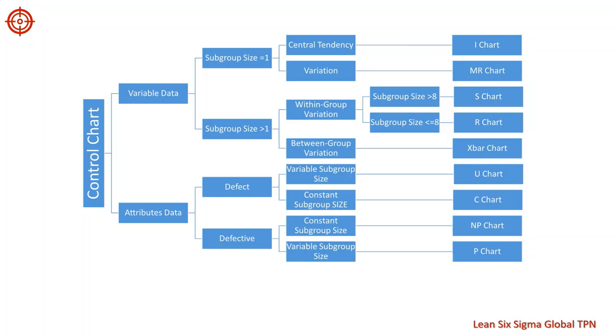When we have individual measurements, we can create artificial subgroups by looking at successive observations and use these observations to create a moving range chart, also called an MR chart. This chart allows us to monitor the variability within successive observations.